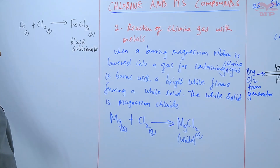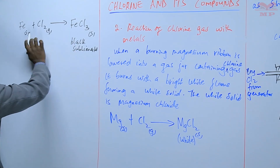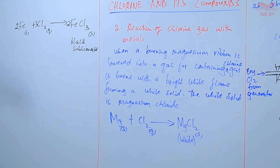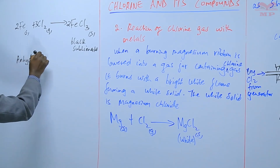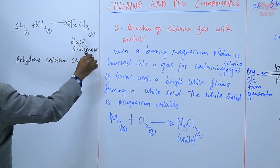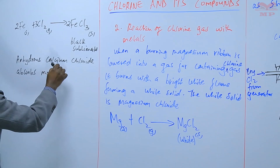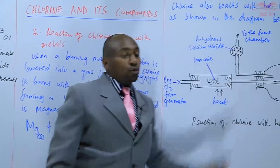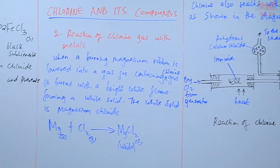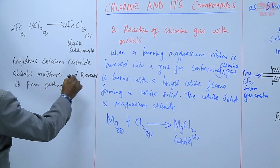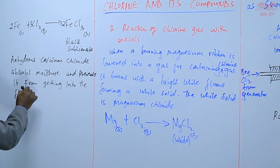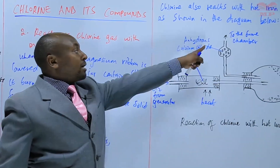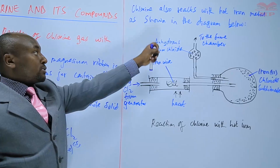The anhydrous calcium chloride prevents moisture from getting into the flask because it is a drying agent. The hot iron wire combines with dry chlorine gas to form iron(III) chloride, which is a black solid or sublimate. On cooling, it collects in the cooler parts of the flask. To balance that equation, we use coefficients 2 and 3. Anhydrous calcium chloride absorbs moisture and prevents it from getting into the flask.